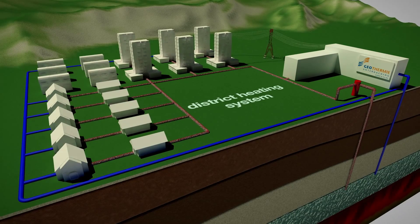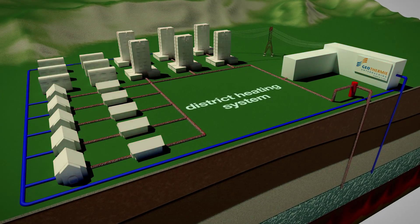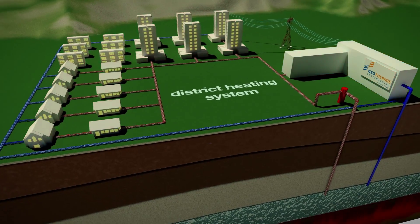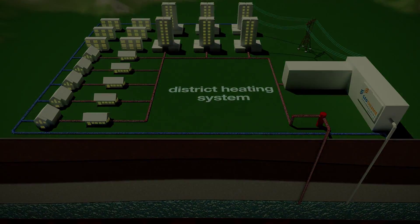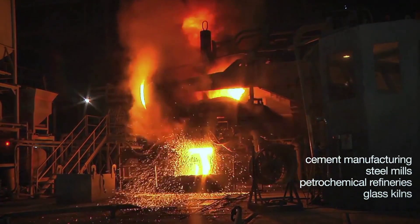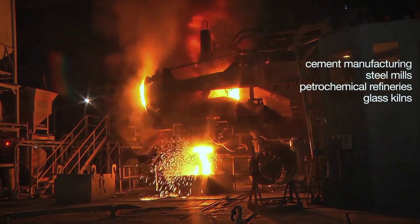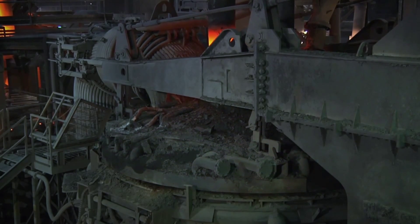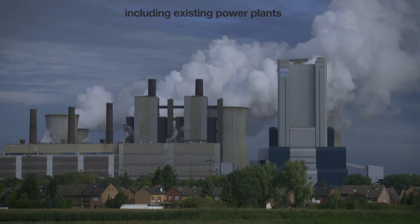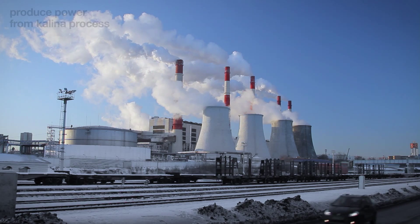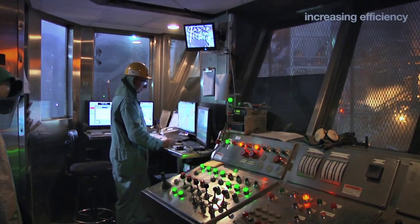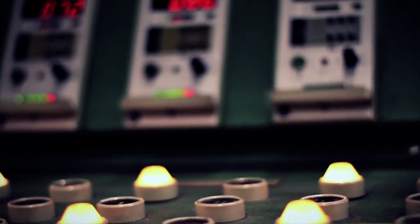It is important to note that Kalina Cycle technology can be used to harness a wide variety of heat sources, not just geothermal heat. Hot exhaust liquids and gases from cement manufacturing, steel mills, petrochemical refineries, glass kilns, and a wide variety of other industrial processes, including existing power plants themselves, can also be used to produce power from the Kalina Cycle process, thus greatly increasing the efficiency of many industrial facilities.